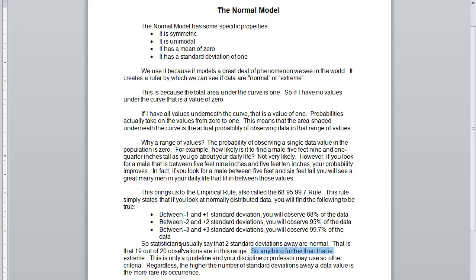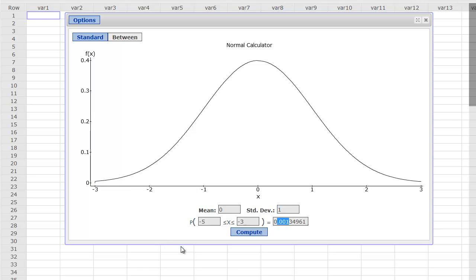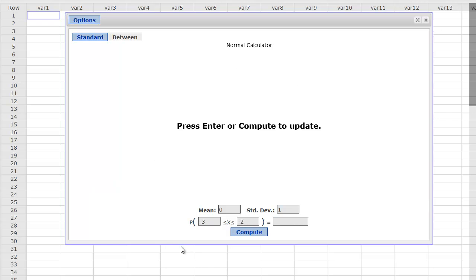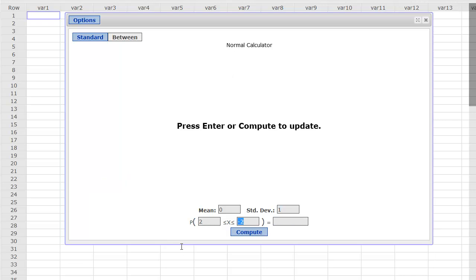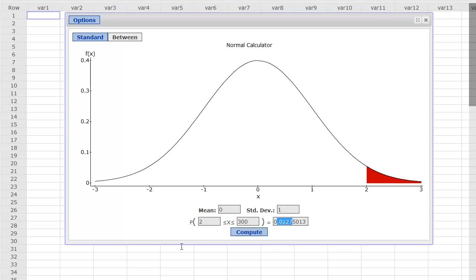Anything further than that is going to be extreme. That's going to be 1 out of 20 observations. If I actually go from negative 3 to negative 2, you can see that only about 2.1% of all data values are going to be in that particular range. Or if I went out to like 300, only about 2.25% of observations are going to be further away than negative 2. Then, of course, I can flip this around and look at the other tail. And what I'll have is about 2.25% of data is going to be further away or higher than 2 standard deviations away from the mean. That's pretty, pretty small.